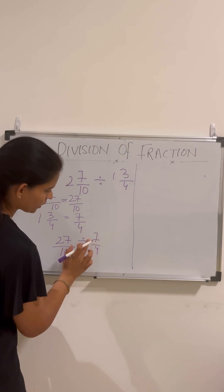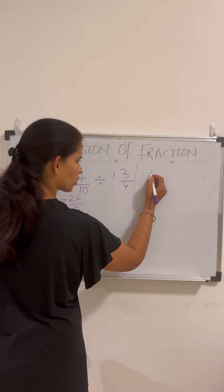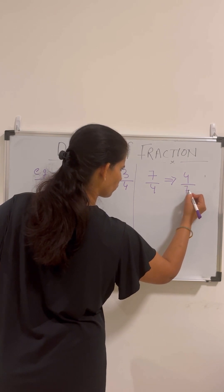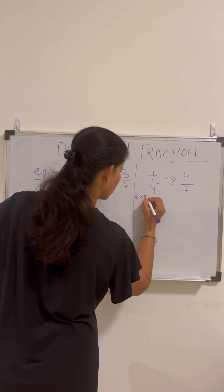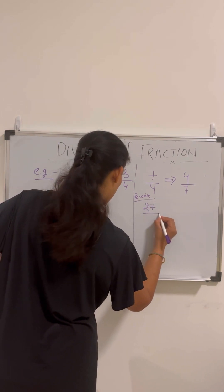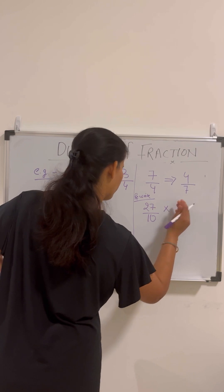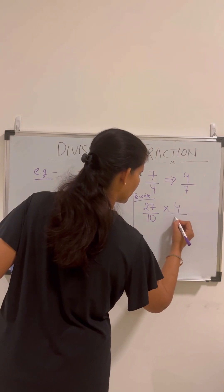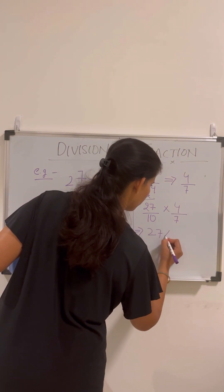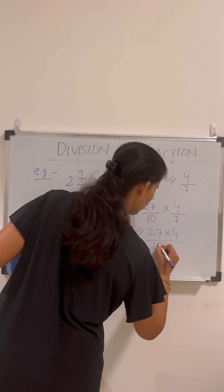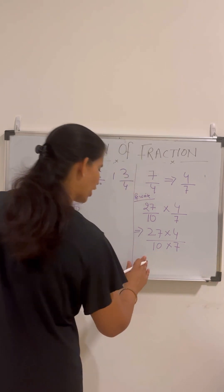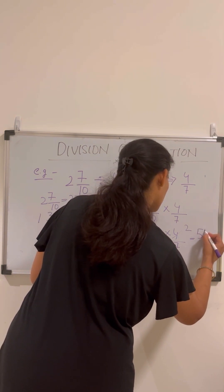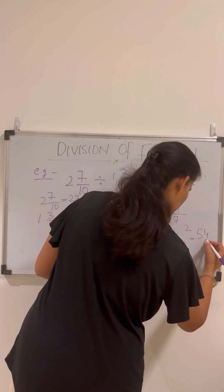Step 1: find the reciprocal of the second fraction — 7/4 becomes 4/7. Now rewrite as multiplication: 27/10 multiplied by 4/7. Remember, we only change the second fraction. Multiply: 27 × 4 = 108, and 10 × 7 = 70. Simplify by dividing by 2: we get 54/35.